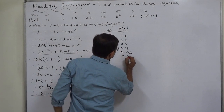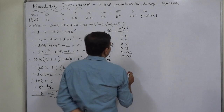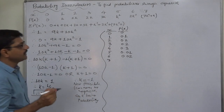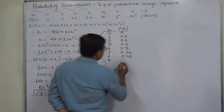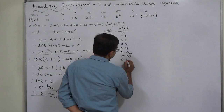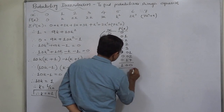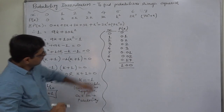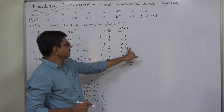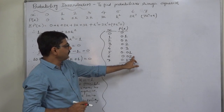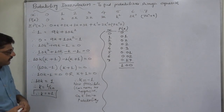For X=6, 2K squared equals 0.02. For X=7, 7K squared plus K equals 0.07 plus 0.1, which is 0.17. The summation of all probabilities is 0.83 plus 0.17, which equals 1. So it is verified.